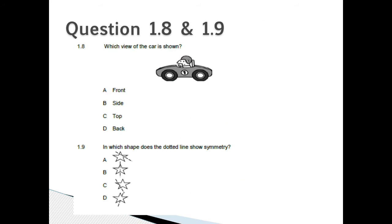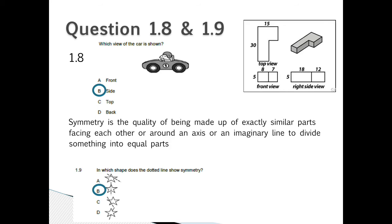Question 1.8: Which view of the car is shown? Is it A. The front side, B. Side, C. Top, or D. Back? Question 1.9: Which shape does the dotted line show symmetry? Question 1.8: The view of the car is the side view which is B. And 1.9: Which shape does the dotted line show symmetry would be B.